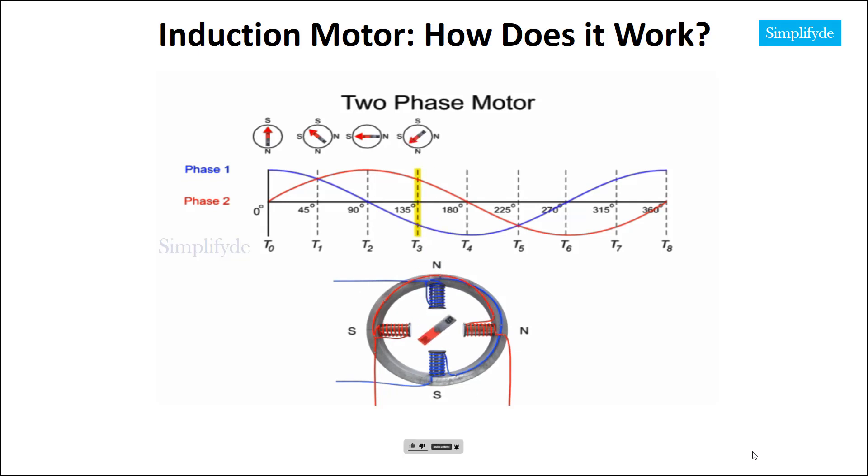As the two sine waves continue to induce current 90 degrees out of phase, the rotor will spin and the motor will run, effectively transforming electrical into mechanical energy.